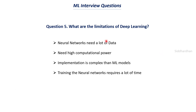The fifth question is: what are the limitations of deep learning? Deep learning is used in many fields and domains such as healthcare and autonomous cars like Tesla, but it has some limitations. The first limitation is that neural networks need a lot of data to make decisions — we need to feed them thousands or even lakhs of data points. This is a main limitation because data is not always available, and if we don't have that much data, we cannot use neural networks.